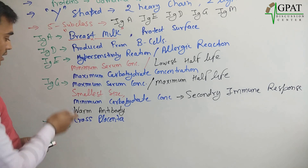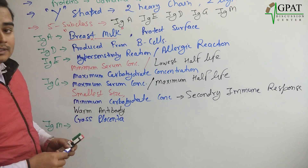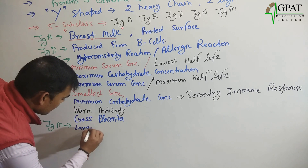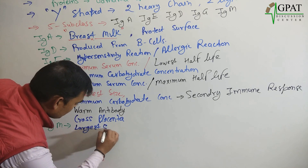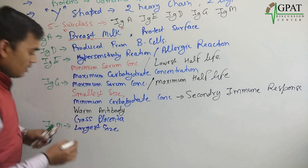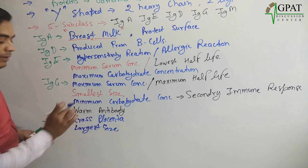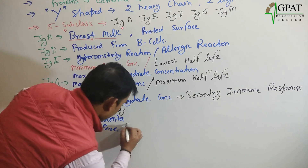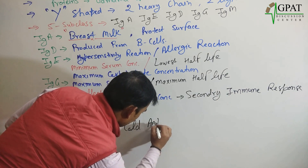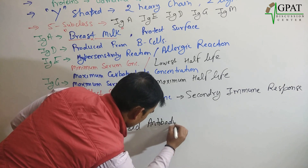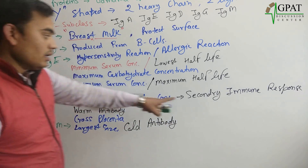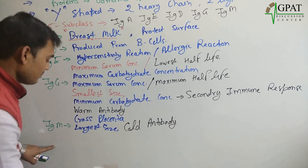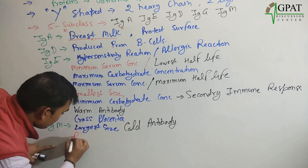Next is IgM. To make a comparison: IgG was the smallest in size, but IgM is the largest in size. IgG was the warm antibody, while IgM is the cold antibody. IgG was responsible for the secondary immune response, while IgM is responsible for the primary immune response.